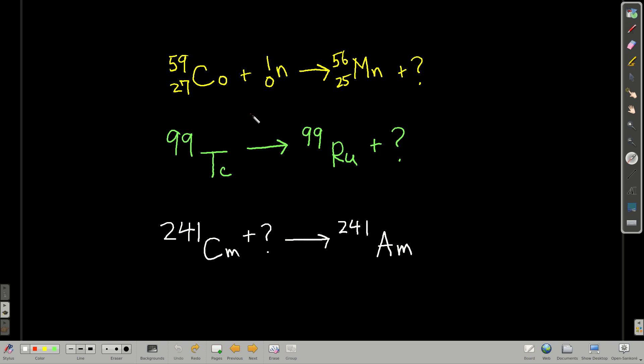All right, so let's do a few examples. We're going to react cobalt-59, and because it's cobalt, its atomic number is 27, with a neutron. And you're told that it makes manganese-56. So what is this over here? Well, you just make the numbers add up. 59 plus 1 is 60. That means 56, we need four more, right? So we know that the top number is 4. On the bottom, 27 plus 0 is 27. 25, we need two more, so that's 2. 4 and 2, that's an alpha particle, or a helium nucleus.